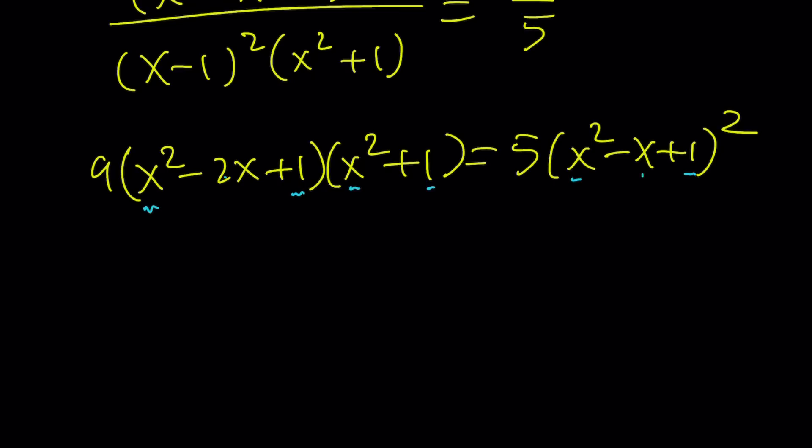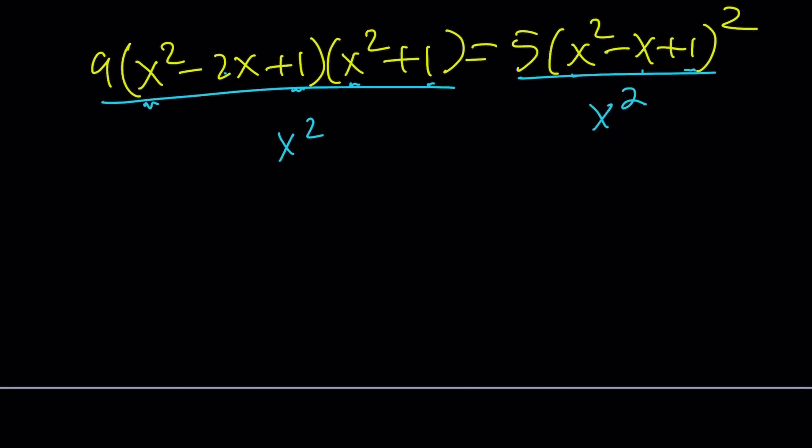We're going to do an interesting transformation which is often used with Olympiad problems like this one, and that is dividing both sides by x squared. You'll see in a little bit why I divide both sides by x squared. Sometimes you have to divide by x cubed or any other power. But instead of dividing this humongous thing, we're going to split up the x squared: x for this and x for that.